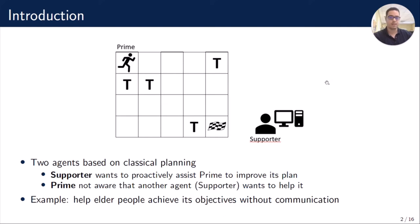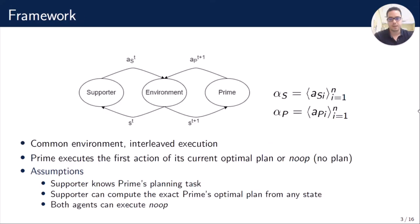This is interesting in domains where communication cannot take place, or in domains where such communication is preferable not to take place. Let's now define the framework. Both agents act in a common environment in an interleaved way: Supporter executes first, and Prime chooses which action to execute from the state reached by the Supporter's action, and so on. Prime always executes the first action of its optimal plan, and a no-operation when such a plan doesn't exist — that is, an action with no preconditions and no effects.